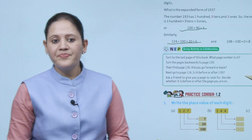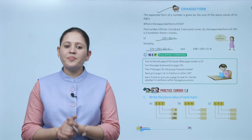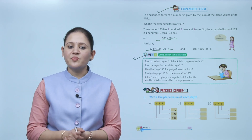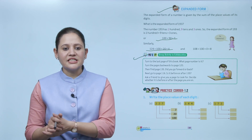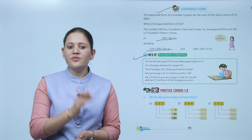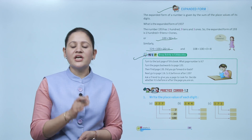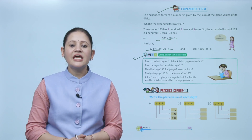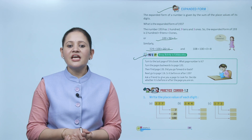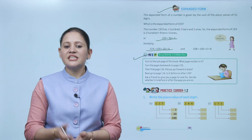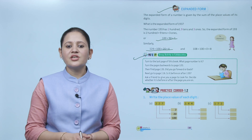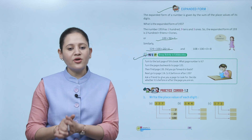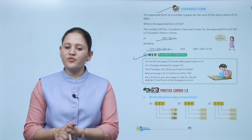Next is group activity: turn to the last page of this book — what page number is it? Turn the pages backward to page number 120, then find page 135. Do you go forward or back? Obviously forward, from 120 to 135. Next, go to page number 160 — is it before or after 135? It is after 135. Ask a friend to give you a page to look for and decide whether it is before or after the page you are on.